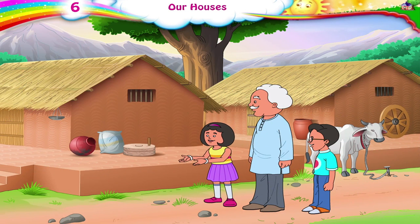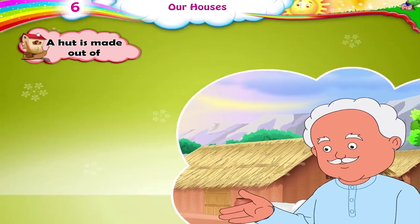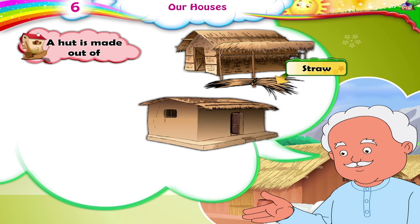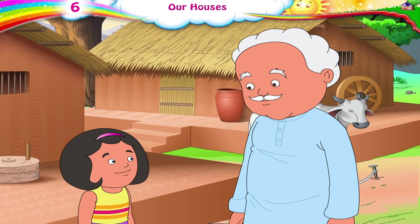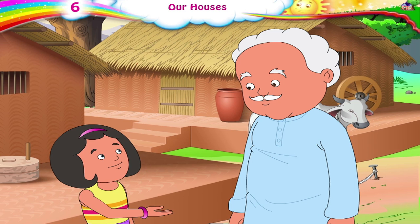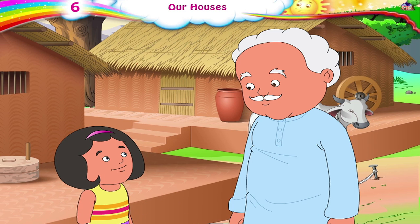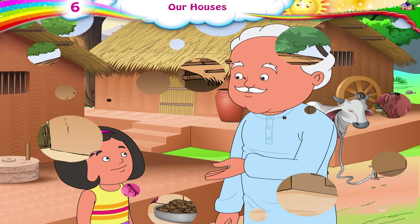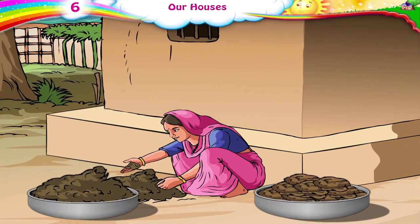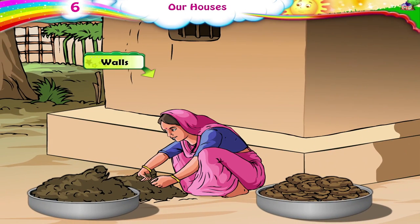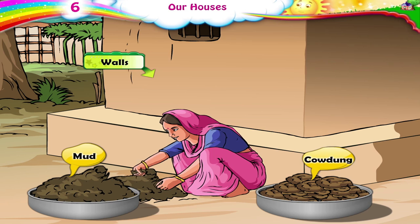They are built so as to allow fresh air and plenty of light to come in. Here, Dadaji, we have reached the huts. A hut is made out of straw, earth, and cow dung. It is thatched with straw and the walls are made of a mixture of mud and cow dung.